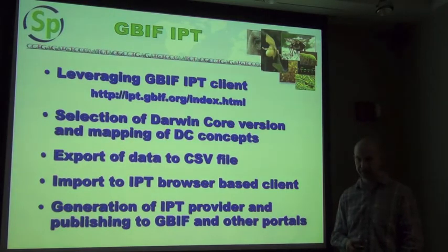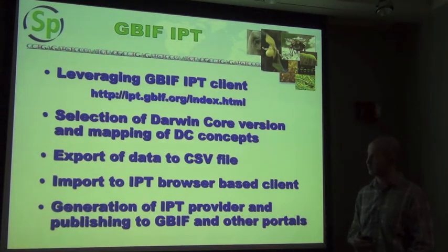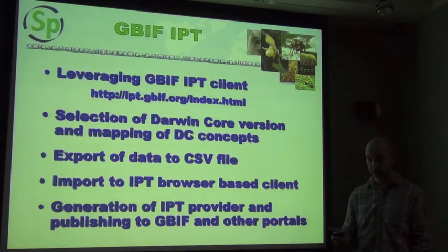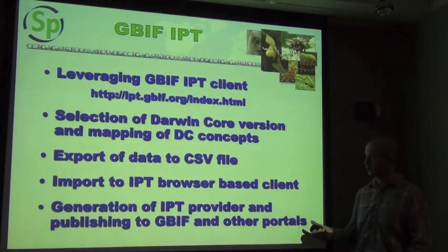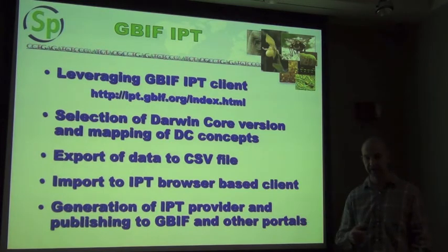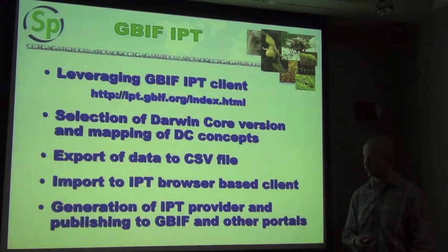We've also incorporated the GBIF IPT client — the Integrated Publishing Toolkit — that allows you to get your data online and join consortia like GBIF, NBII, Fishnet, HerpNet, Manis, and Ornis. We have built the Darwin Core mappings into the system, and essentially it's just a case of mapping your fields in your database to the Darwin Core terms, exporting those terms as a CSV file, incorporating that into the IPT web browser-based client, and publishing your data so that the outside world can see it.